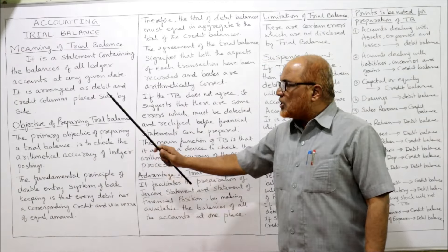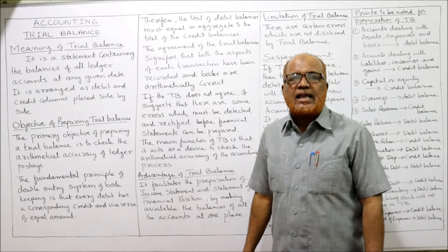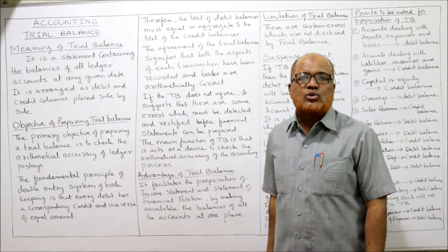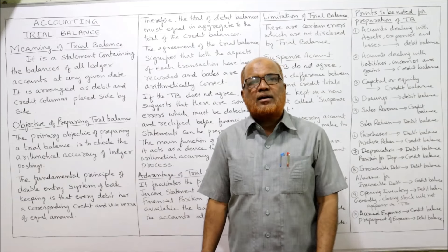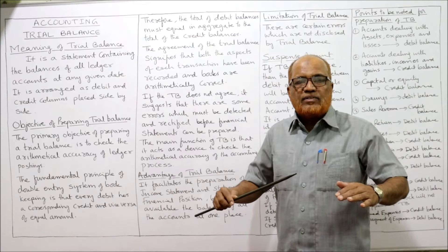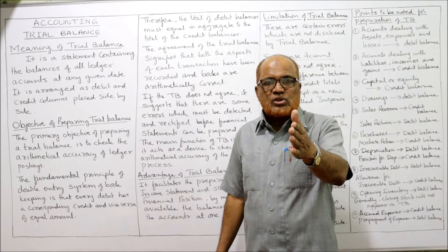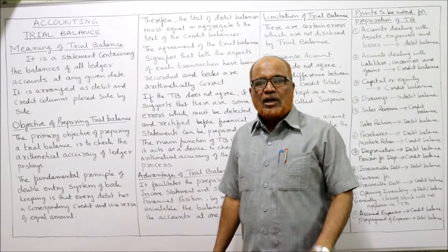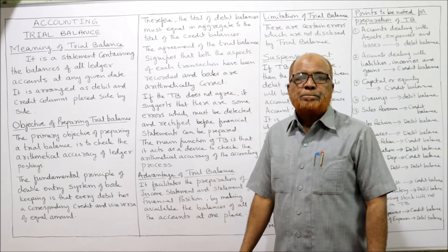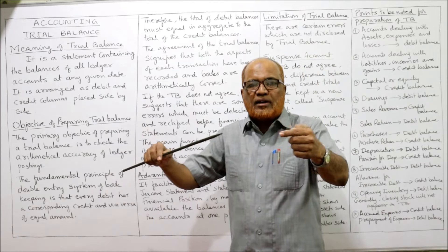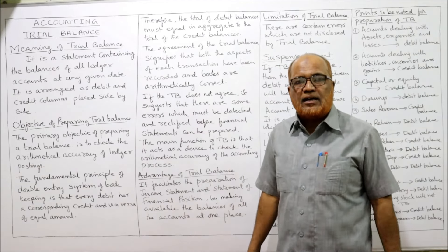The objective of preparing the trial balance is to check the arithmetical accuracy of the books of accounts — whether arithmetically all the accounts are correct or not. If there are any errors committed while posting entries from books of original entry to ledger accounts, the trial balance total debit and credit will not be the same. Whenever the total of the debit column and total of the credit column are not equal, it is concluded that there are some errors in the ledger posting.